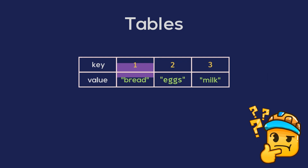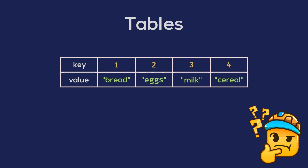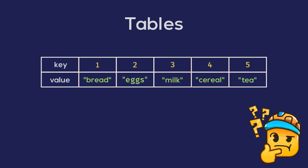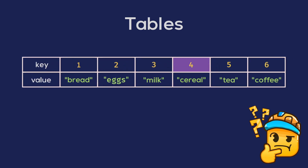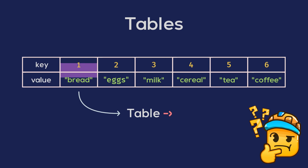In a table, each item is assigned to a key starting from one, the first key. As we add more items, the table continues to grow and assigns each new item to the next available key. And if you want to fetch an item from a table, you just need to use its key to locate it. We can group values together and make them easily accessible whilst keeping our code much more organised.